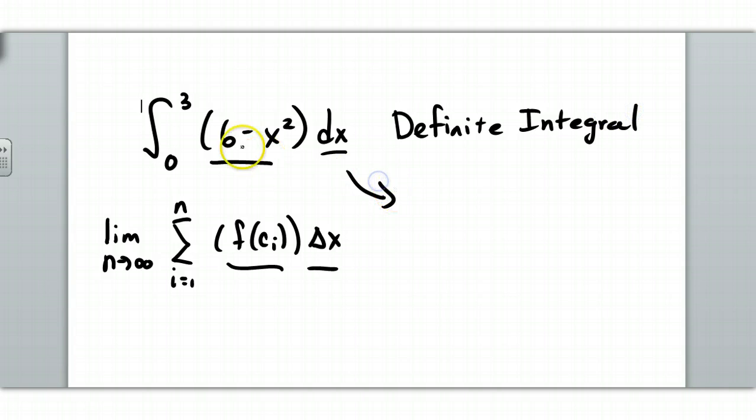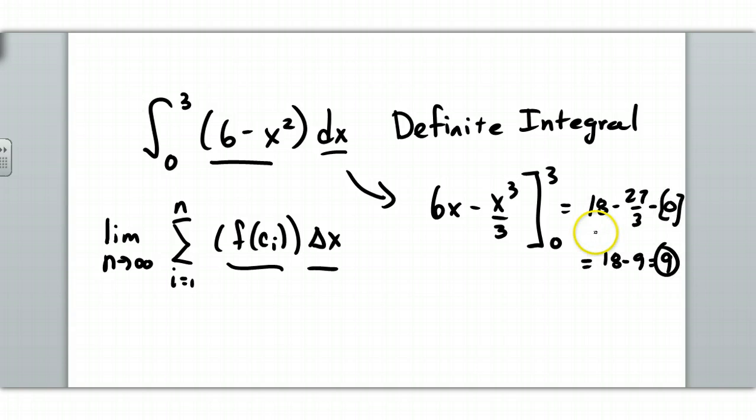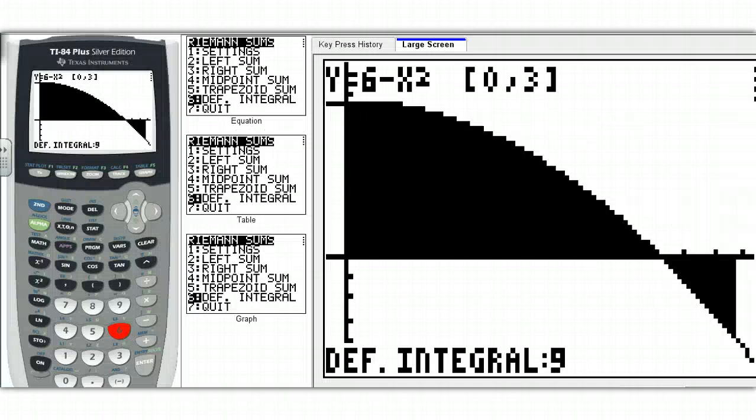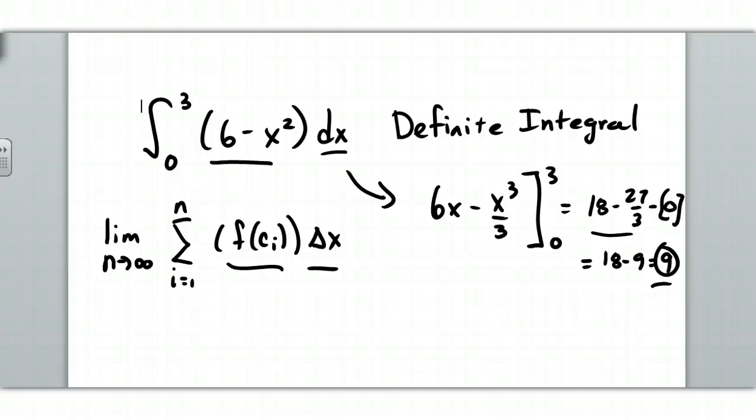How do we work this one out? Well we take the antiderivative. This would be 6x minus x cubed over 3. And then we evaluate it from 0 to 3. Plug the 3 in first. So in this portion I plug in the 3. In this portion I plug in the 0. I subtract the two quantities and I get 9. Which is exactly the same thing that our calculator told us. So hopefully some of this stuff is coming together for you. This summation symbol turns into this smooth S because we're going as n goes to infinity. Okay? So this just means the area under the curve from 0 to 3.